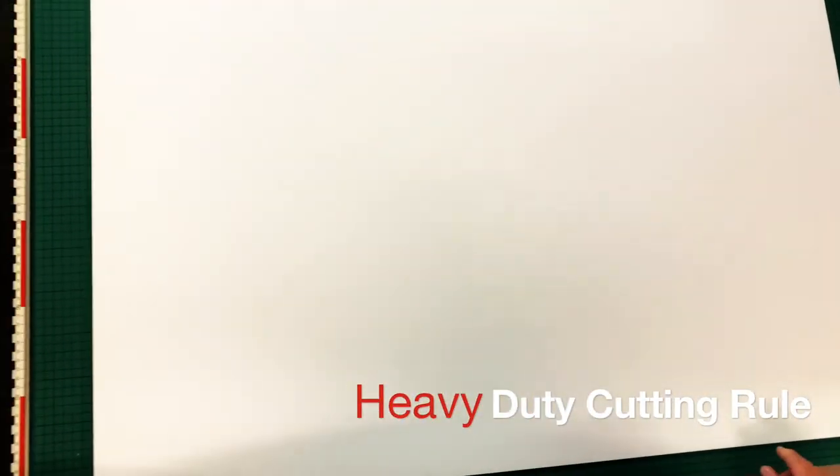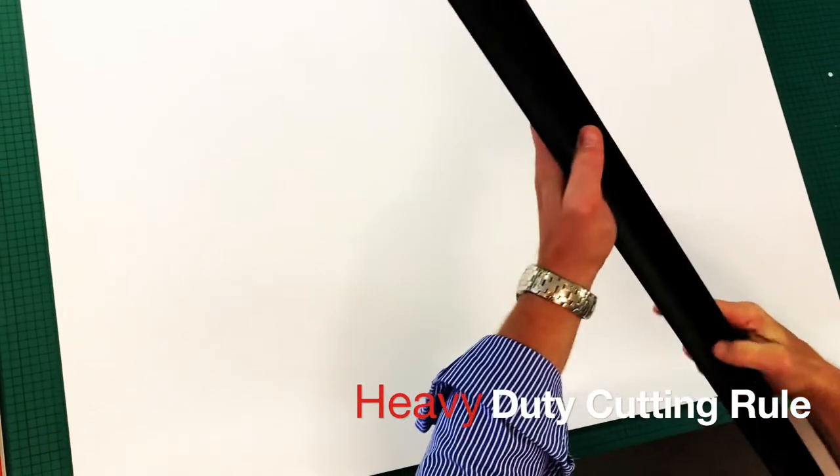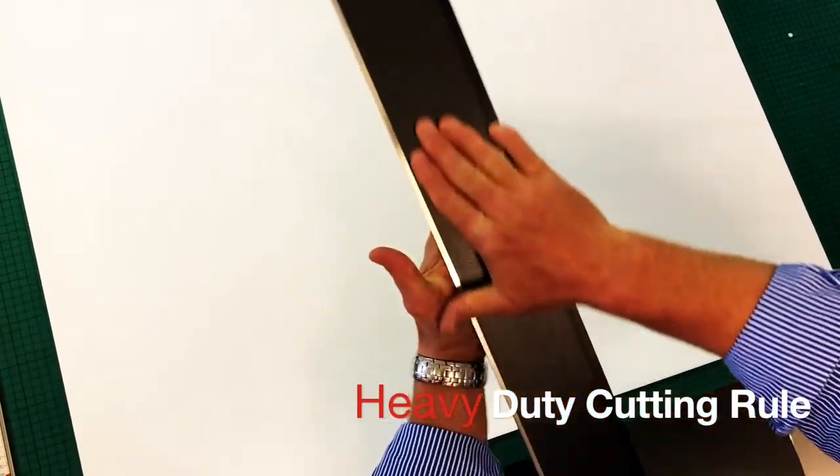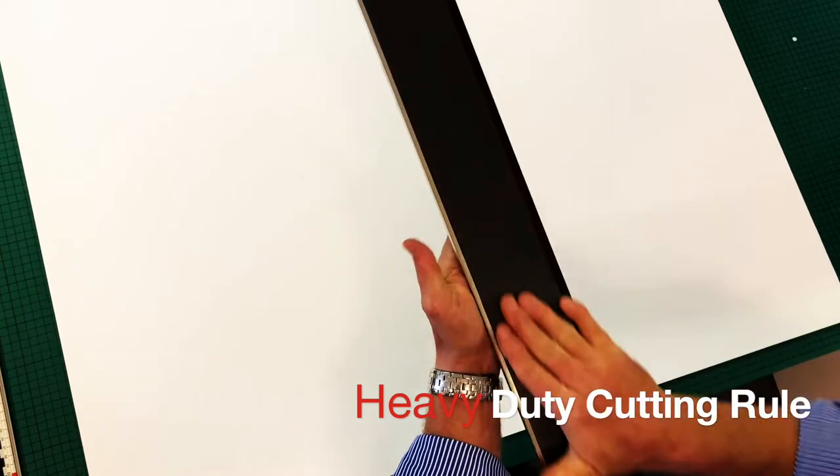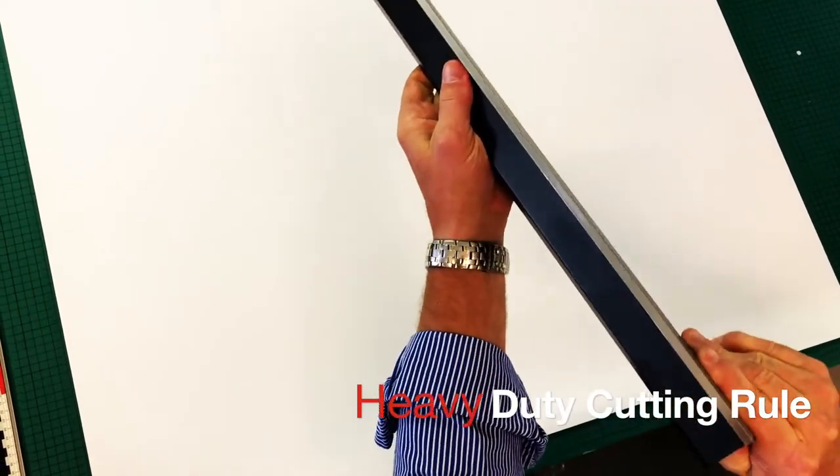So, what we've got now is this very heavy duty Graphic Pro ruler. We've got a non-slip surface on the back there and it is 4mm thick, aluminium.